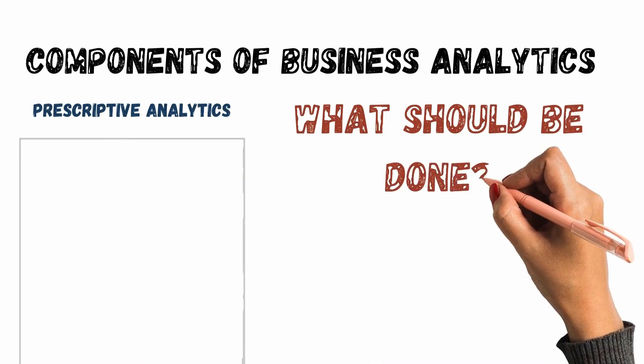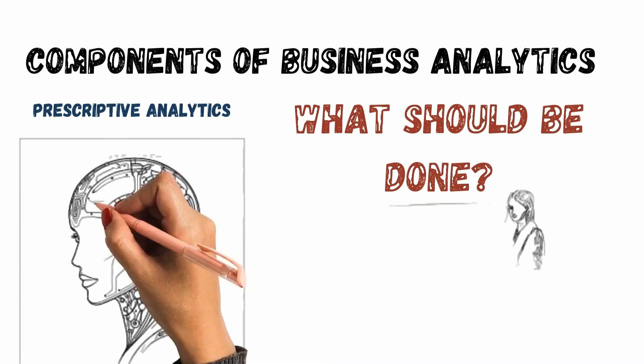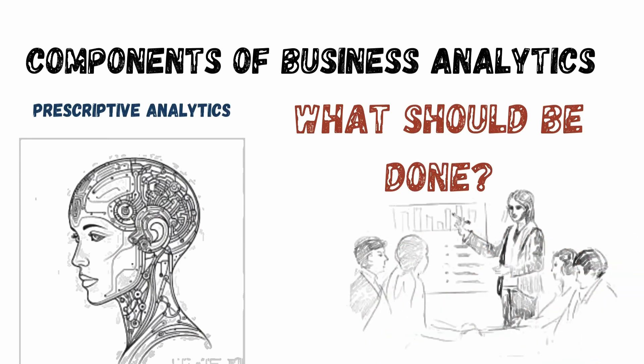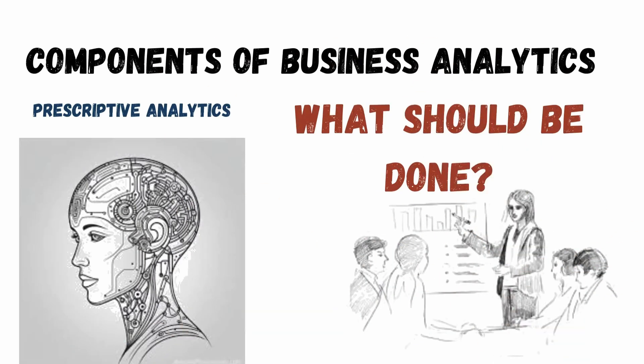The fourth one is prescriptive analytics. Here we mention what could be done or what should be done — a scientific recommendation is given based on all these analyses. We can also take help of generative AI to assist in finding the right answers. For our sales example, since acquiring new customers is the profitable way forward, we can give scientific recommendations on how to network and tap new customers.